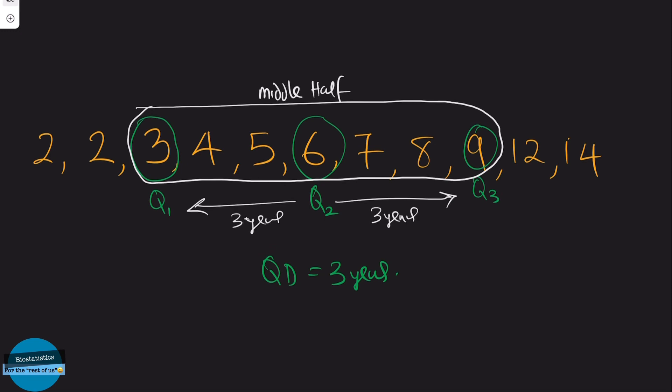So what we're saying in essence is 50% of our data points are between 6 minus 3, which equals 3, and 6, that's the median, plus 3, which equals 9. And the other 50% of the data are either below 3, that's Q1, or above 9, that's Q3.